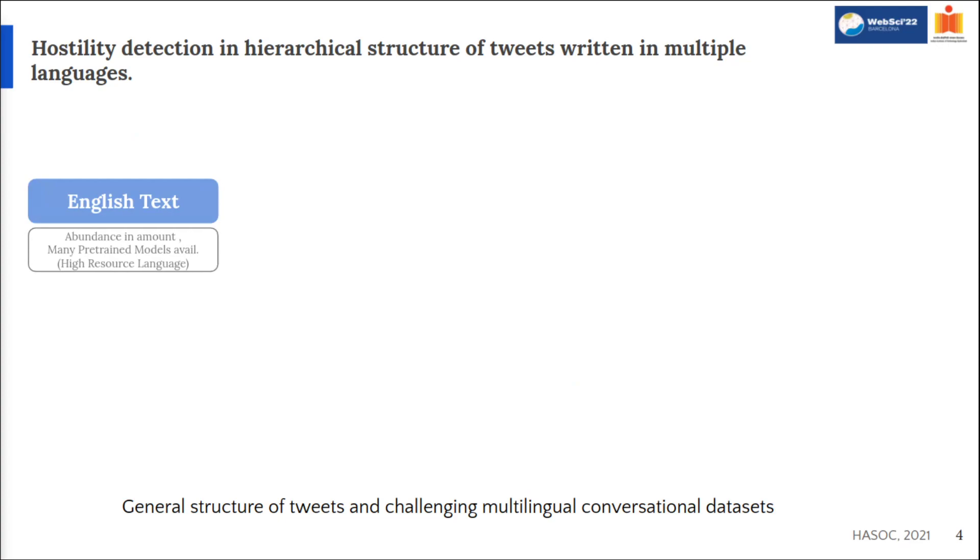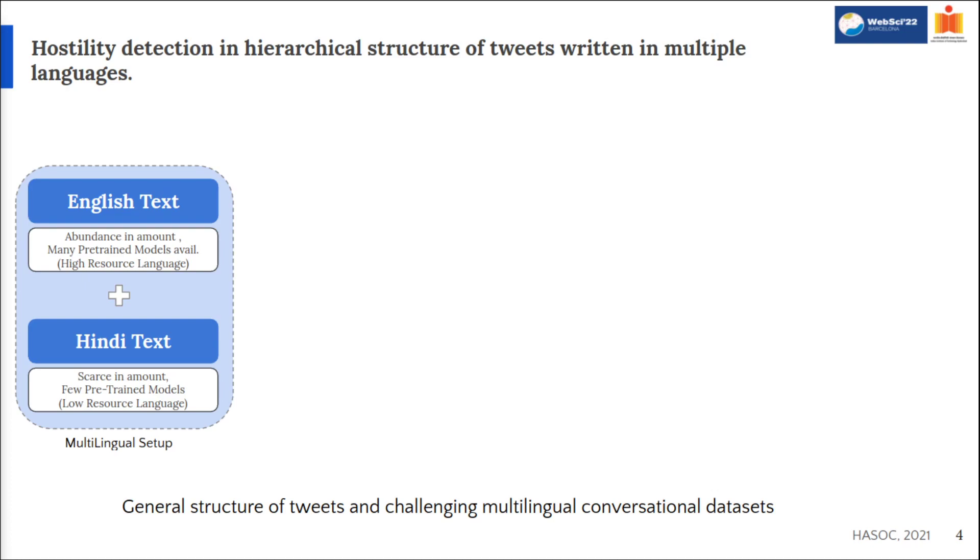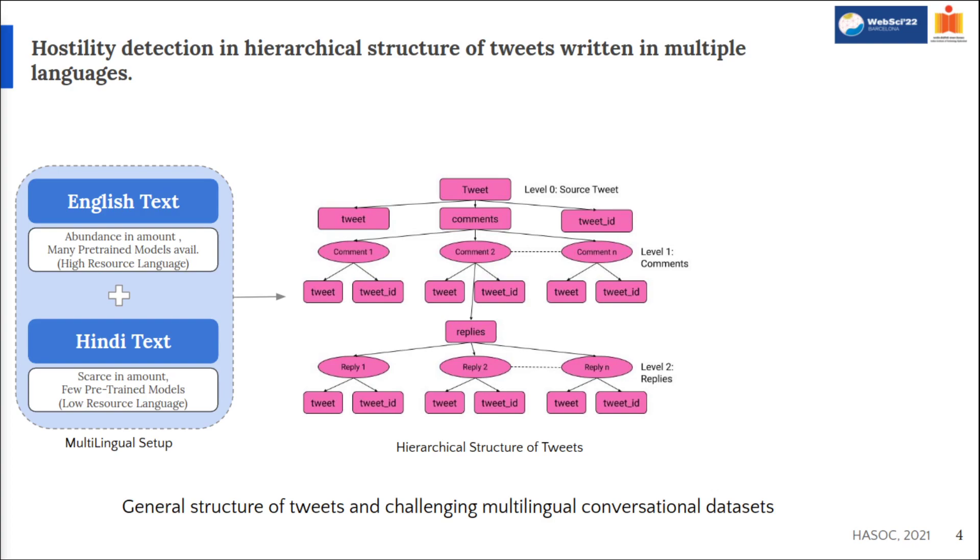Starting with the introduction, Hostility Detection in English text is a well-studied domain so there are a number of pre-trained models available to us. On top of the same, we add some low resource language text like Hindi to give it a multilingual setup, as text in tweets that we intend to work on can be in multiple languages as well. This combined text with high and low resource language is called Code Mixed Data. Social media platforms like Twitter contain a hierarchy of conversational threads as seen in the comments sections of the news feed.